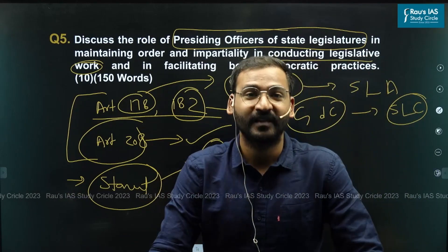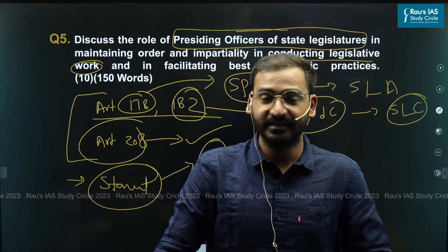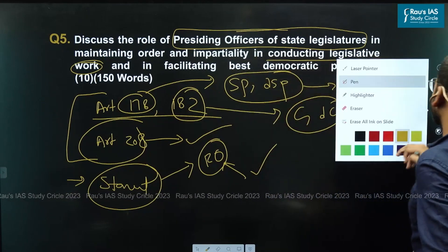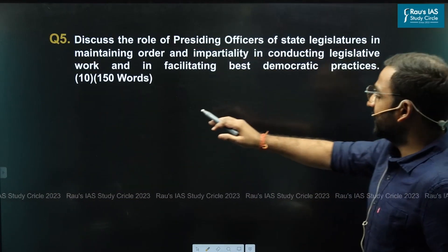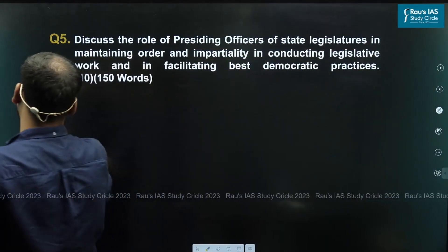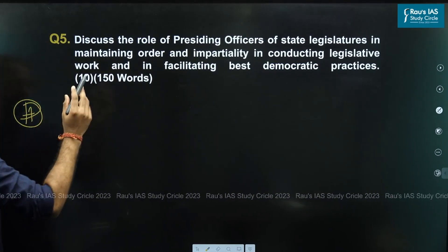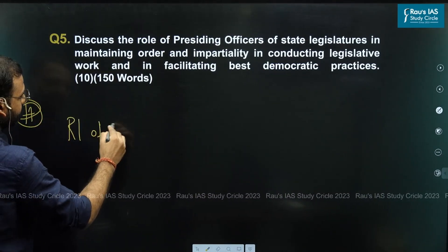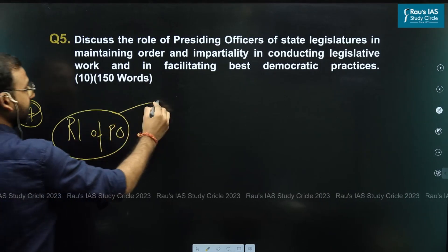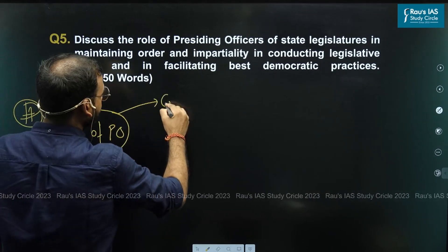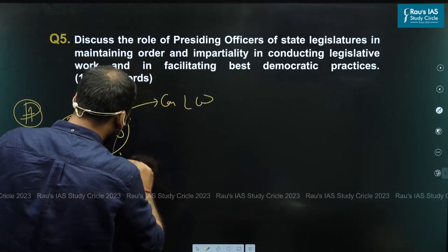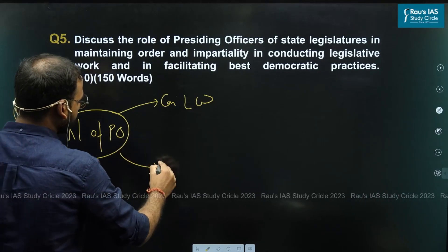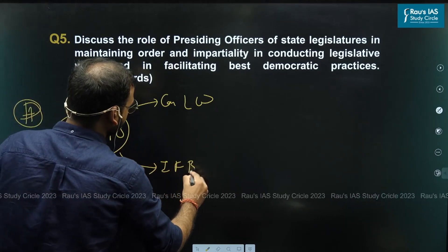After the introduction, we move on to the main body part of the question. The main part is in two parts: the first is about the role of the presiding officer in conducting legislative work, and the second part is about facilitating best democratic practices.